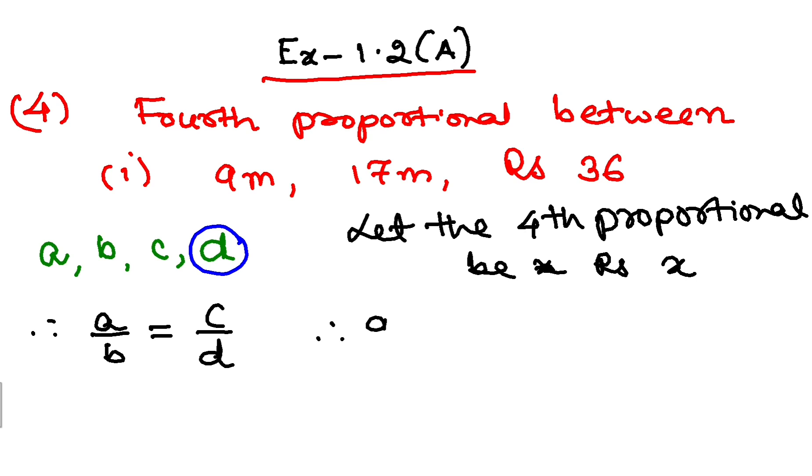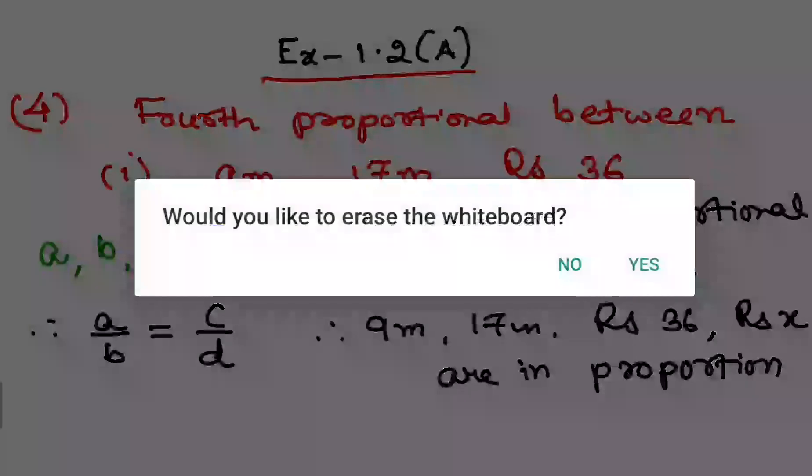So my numbers, that is 9 meter, 17 meter, rupees 36, and rupees X, all these numbers are in proportion.